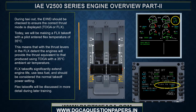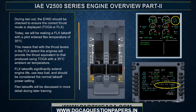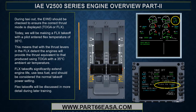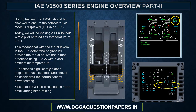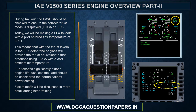During taxi out, the EWD should be checked to ensure the correct thrust mode is displayed — TOGA or FLEX. Today we will be making a flex takeoff with a pilot-entered flex temperature of 35 degrees centigrade. This means that with the thrust levers in the flex detent, the engines will provide thrust equivalent to that produced using TOGA with a 35-degree ambient air temperature. Flex takeoffs significantly extend engine life, use less fuel, and should be considered the normal takeoff power setting.